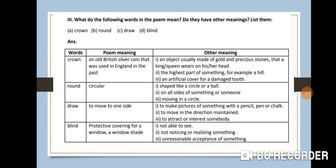Next word is 'blind'. The poem meaning is a protective covering for the window or window shade — in the old time, there were two parts of a window used to close it, called a window shade or blind. Other meanings: unable to see; not noticing or not realizing something; unreasonable acceptance of something — these are all called blind.